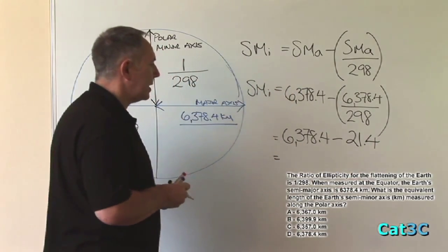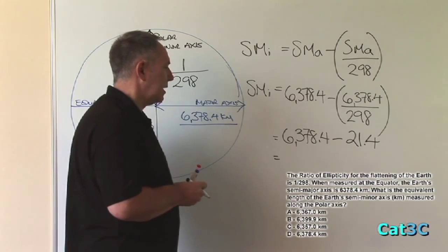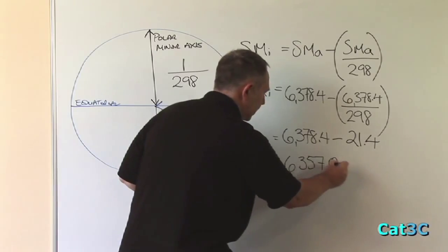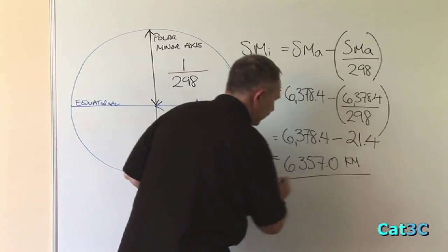Subtract 21.4 from 6,378.4, and it gives us 6,357.0 kilometres.